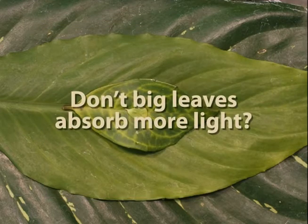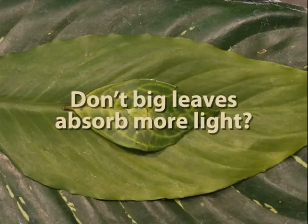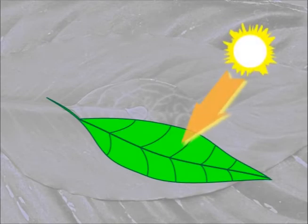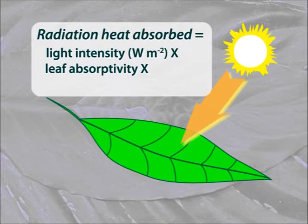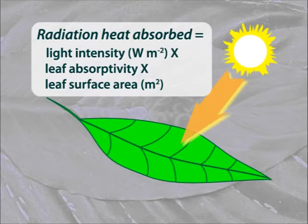Now you might be thinking — so what? Of course the big leaf will be hotter. It has three times the surface area and is absorbing three times the radiation heat. It's not that simple, though. Let's take a hypothetical leaf. First and obviously, the more intense the light, the more heat it transmits to the leaf. Second is the absorptivity of the leaf — the opposite of reflectivity. The more reflective the leaf, the less heat it will absorb. For our black model leaves, reflectivity is close to nil. Finally, there's the leaf surface area. The greater the leaf surface area, the more heat it will absorb. Our large leaf model has three times the surface area, so all other things being equal, it should absorb about three times the heat that the small leaf model does.